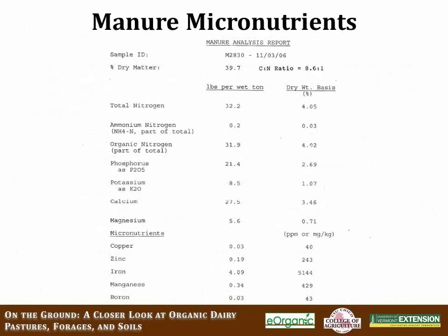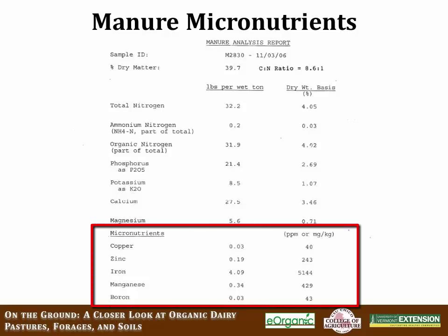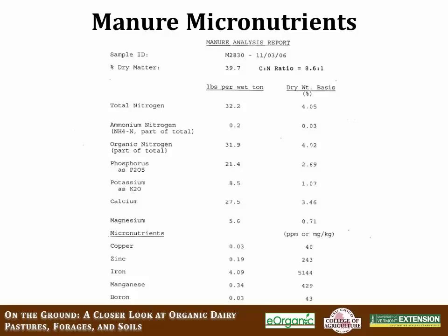Manure can be a very good source of micronutrients. Looking at a standard manure test from a Vermont sample, you can see the levels of micronutrients present. For boron in particular, there is 0.03 pounds per ton — not a substantial amount, but if you're applying 10 tons of manure you're adding roughly one-third of a pound of boron per application. When adding manure on a yearly basis, you're also adding micronutrients, so you don't want to overdo it. Use information from soil tests and plant condition to determine when and if additional micronutrient fertility is needed.